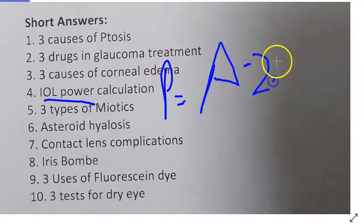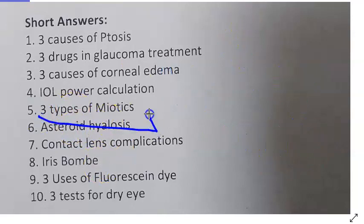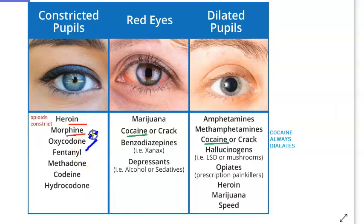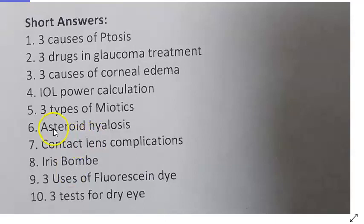IOL power calculation: Power = A − 2.5L − 0.9K, where L is the axial length and K is the keratometry reading (corneal curvature). Three types of miotics: pilocarpine and ecothiopate. Miotics that constrict the pupil — opioids like heroin, morphine, fentanyl, and codeine also cause miosis.